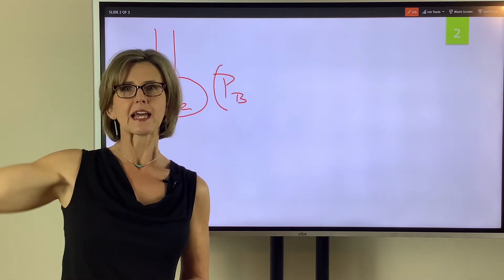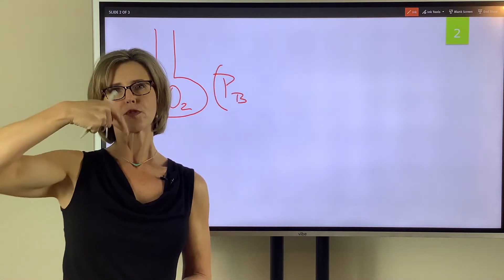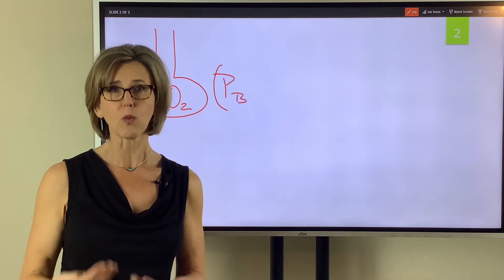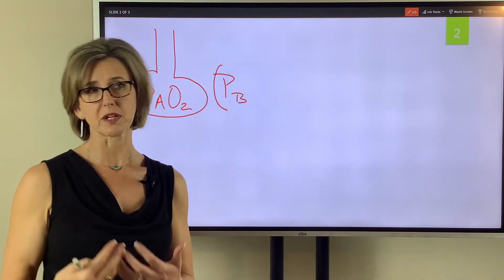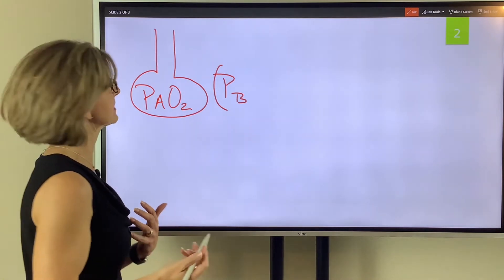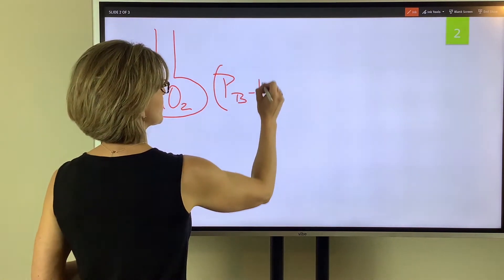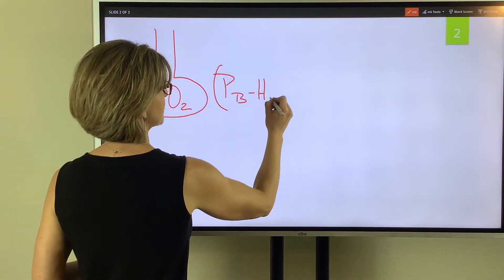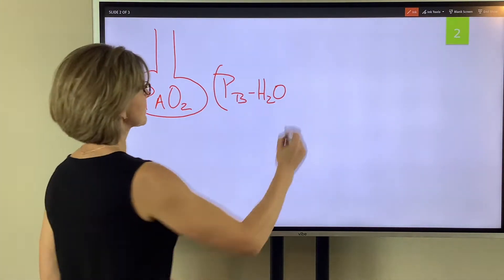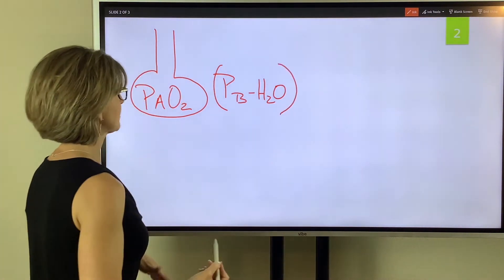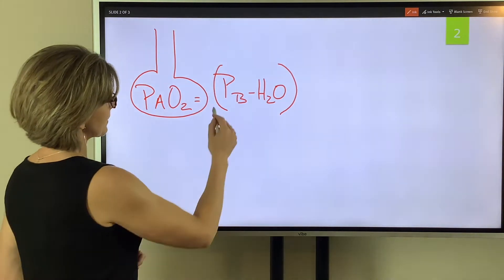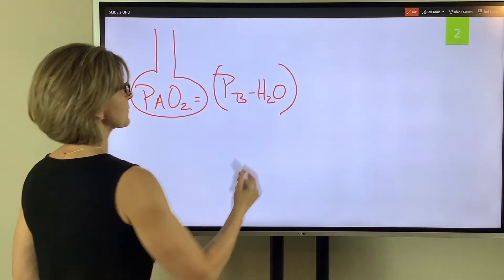As that air moves through our nose and our tracheobronchial tree, it picks up water vapor because our nose heats and humidifies gases. We don't want to know about that water vapor pressure, so we need to subtract that out. That's the first part of the formula for PAO2: barometric pressure minus water vapor pressure.